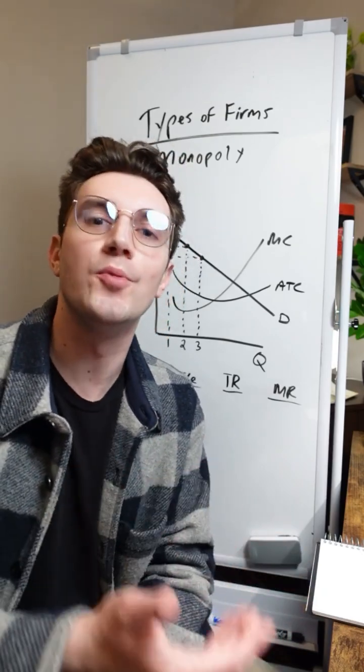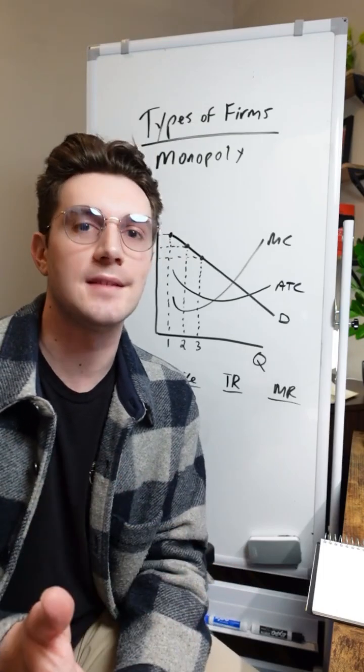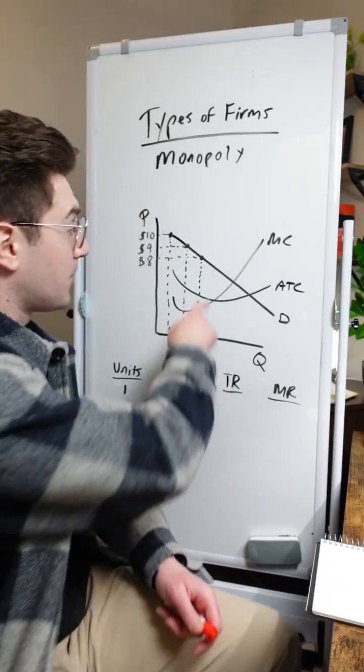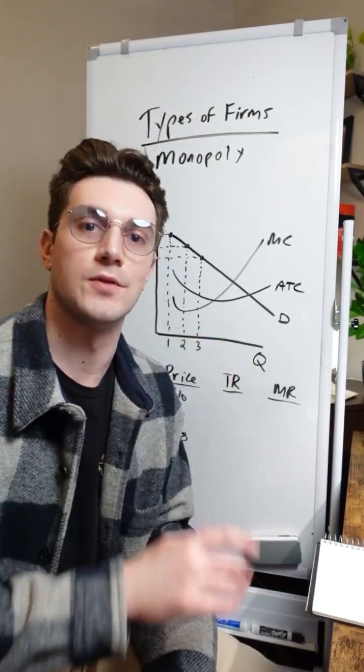But with monopolies, they're the only firm in the market. So they're price makers in the sense that they can set the price for the market depending on how many units they output. Because how many units they output determine where we lie on the demand curve, aka the willingness to pay for consumers.